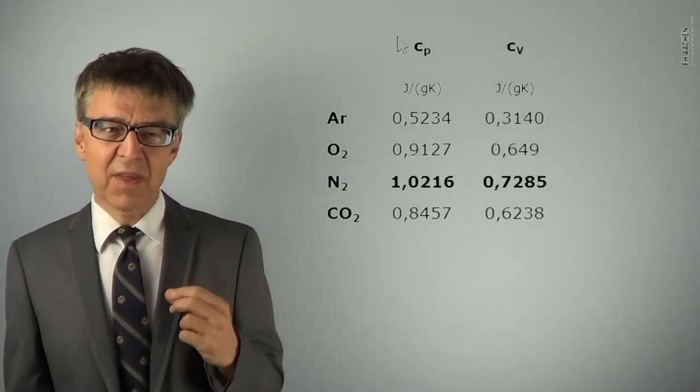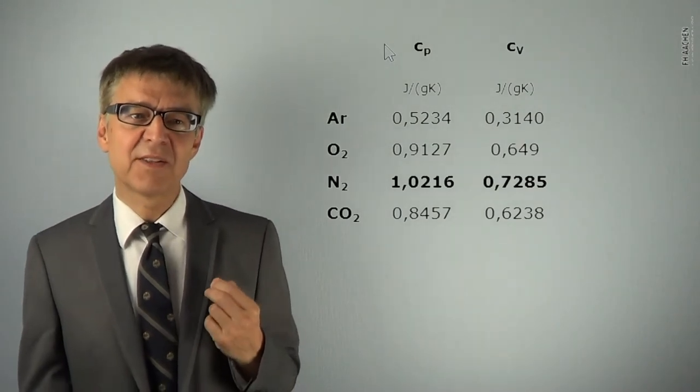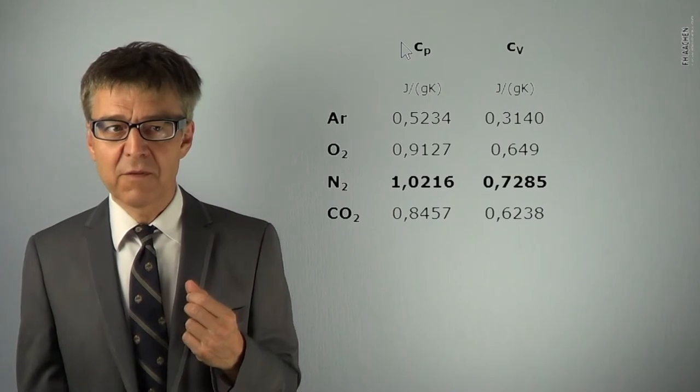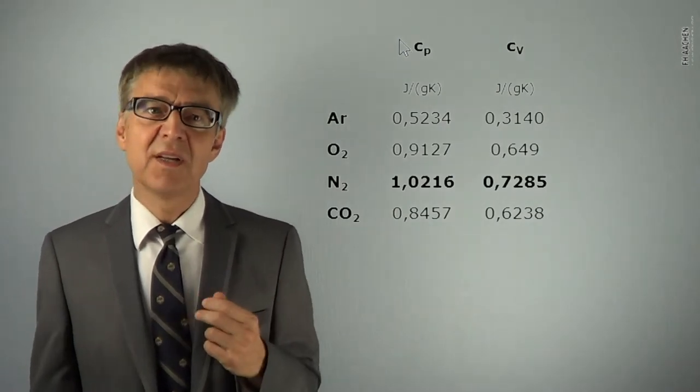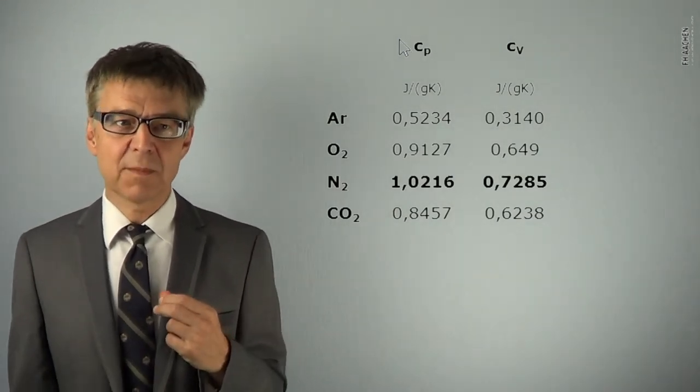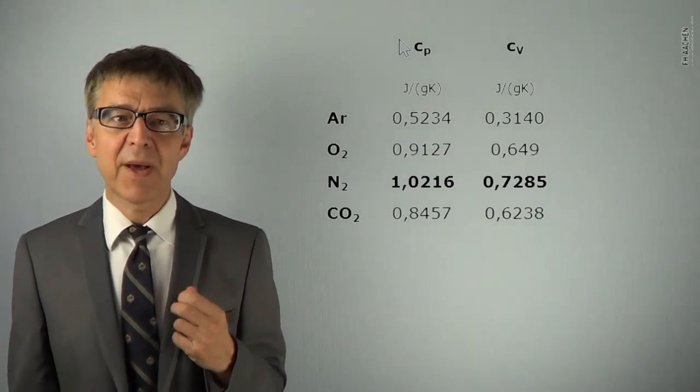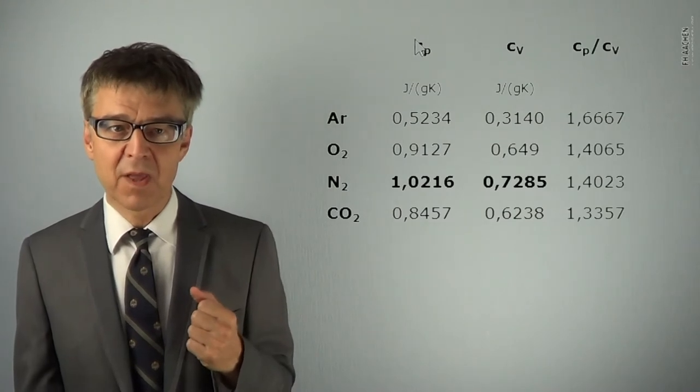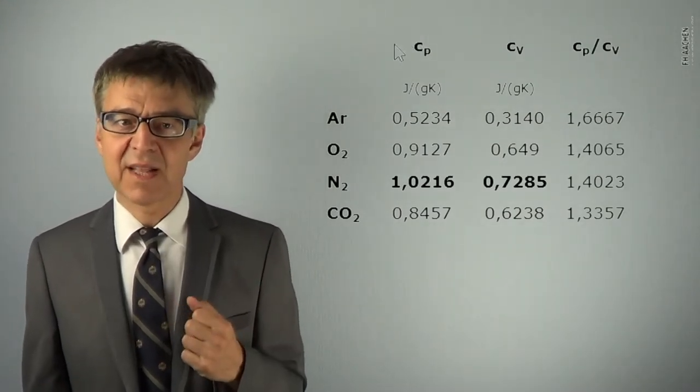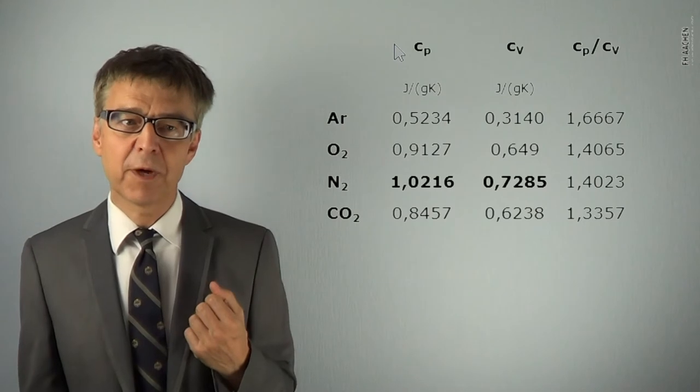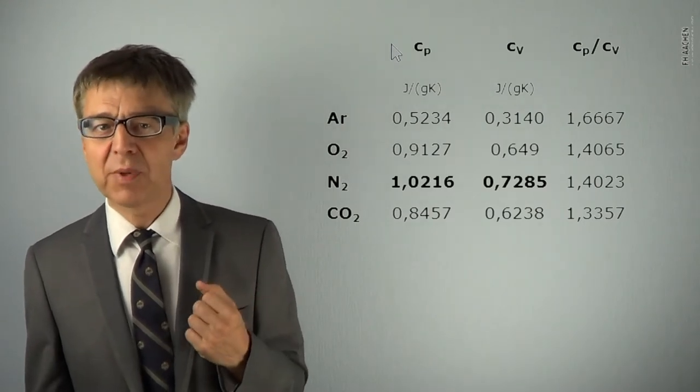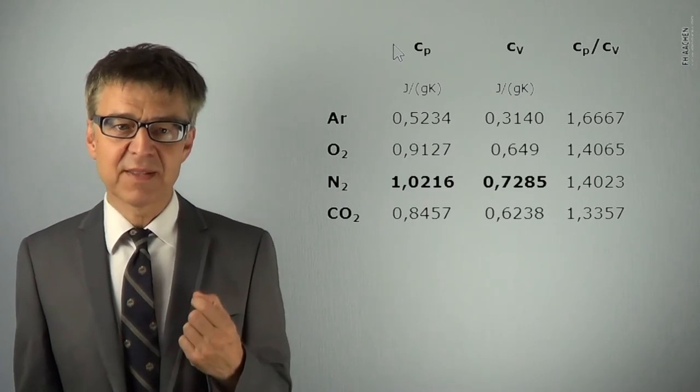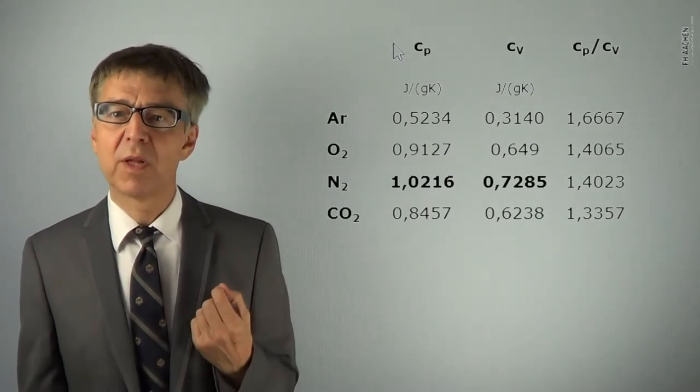In addition, the heat capacities of gases show a number of interesting phenomena. For gases, the ratio C sub p over C sub v, the so-called adiabatic coefficient kappa, is related to the molecular structure. Having single atom gases like argon, helium or mercury vapor, kappa turns out to be 1.6. Diatomic gases show a kappa value of 1.4.